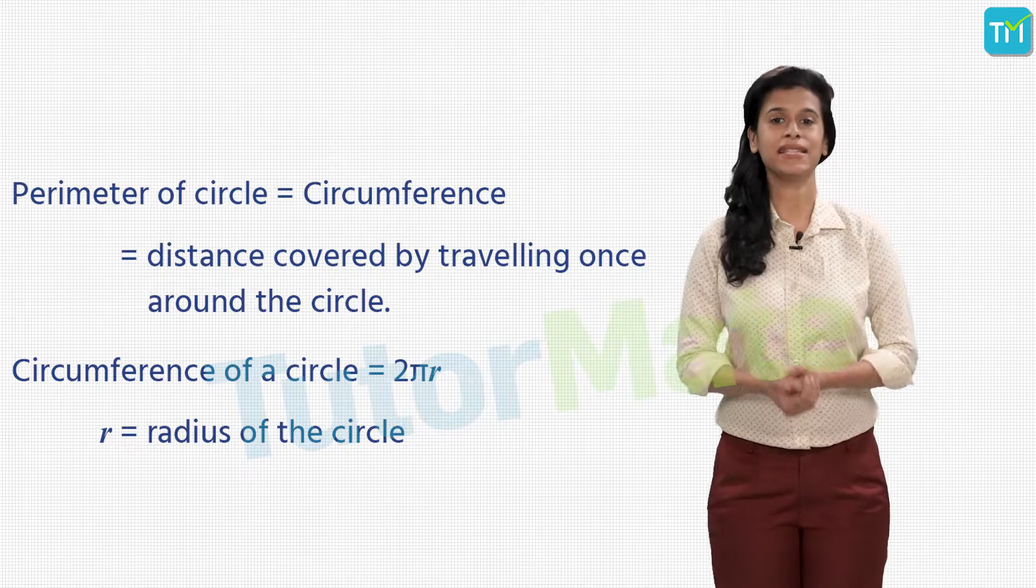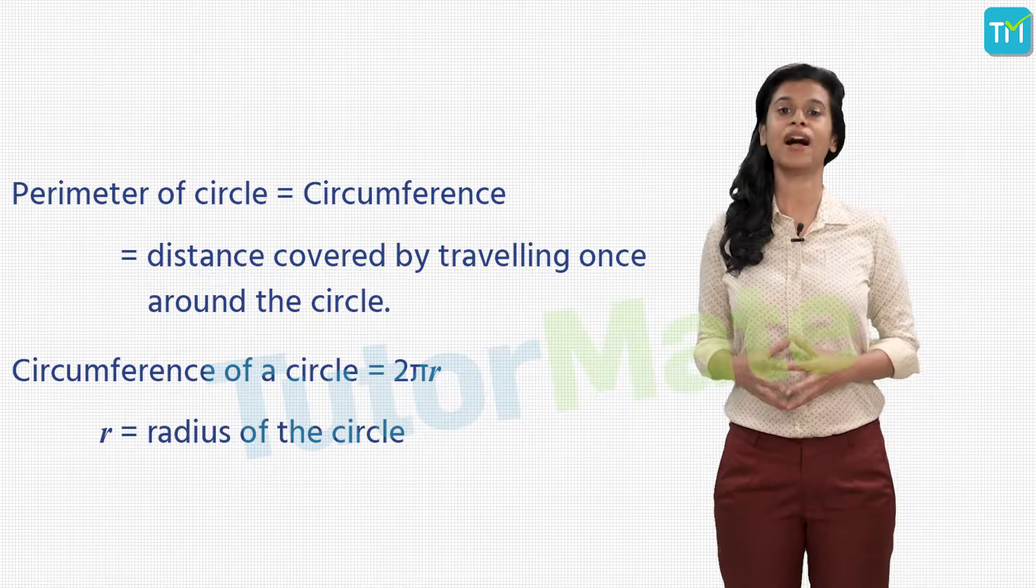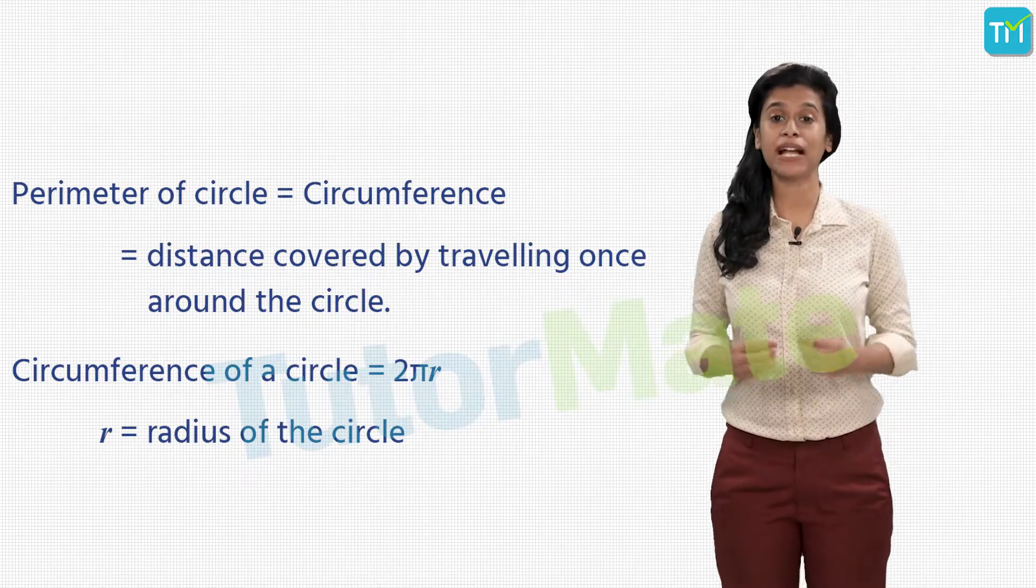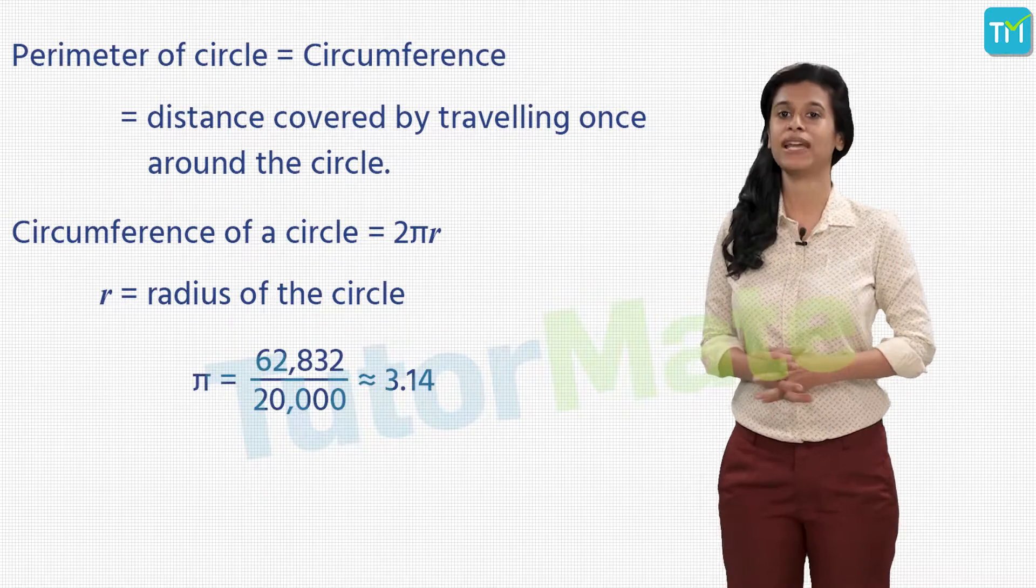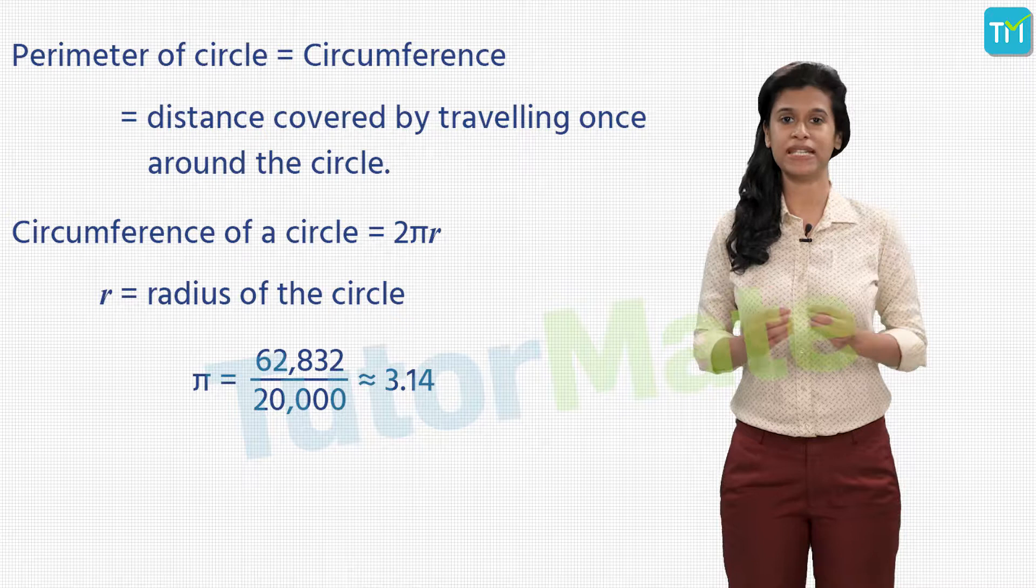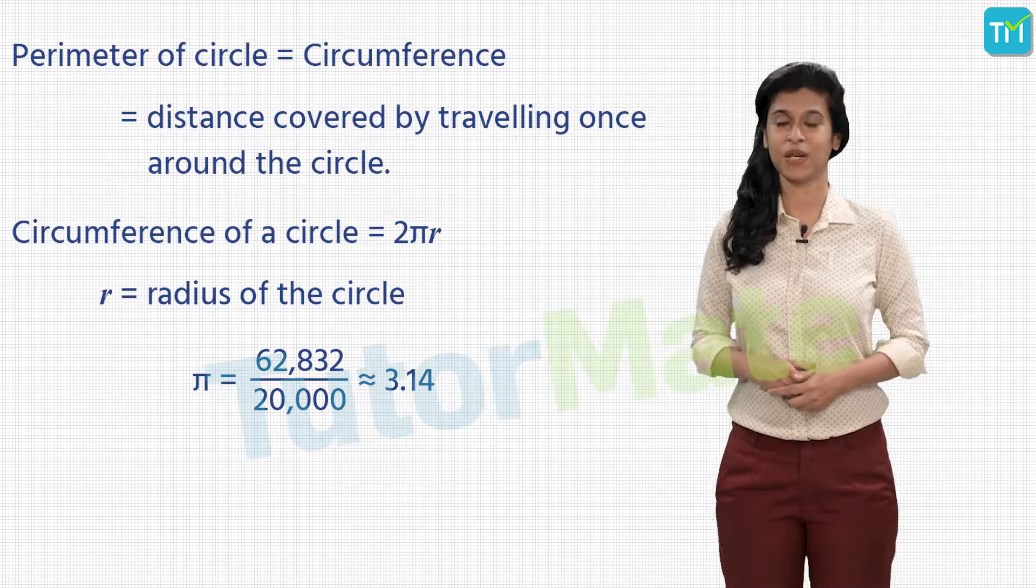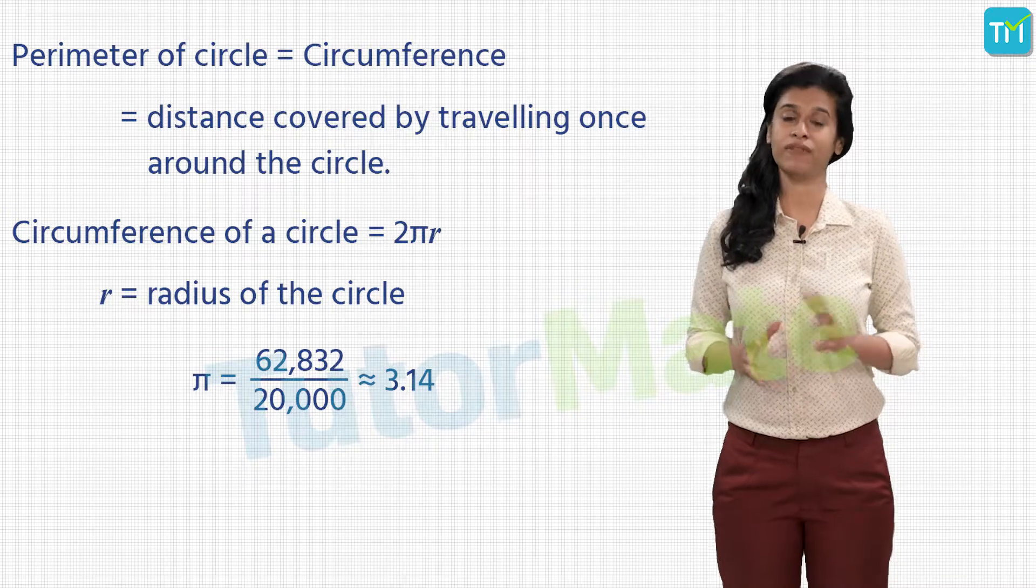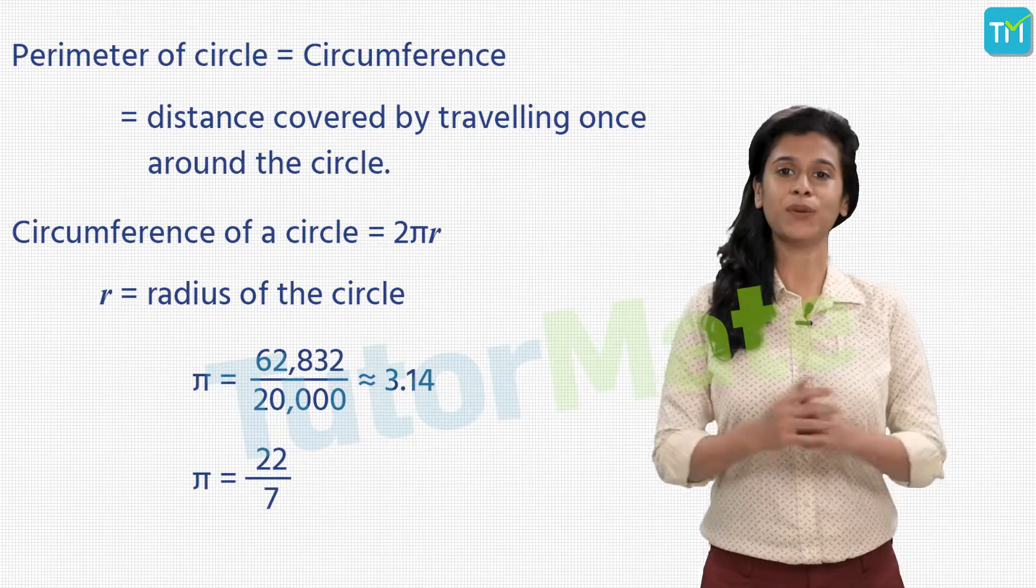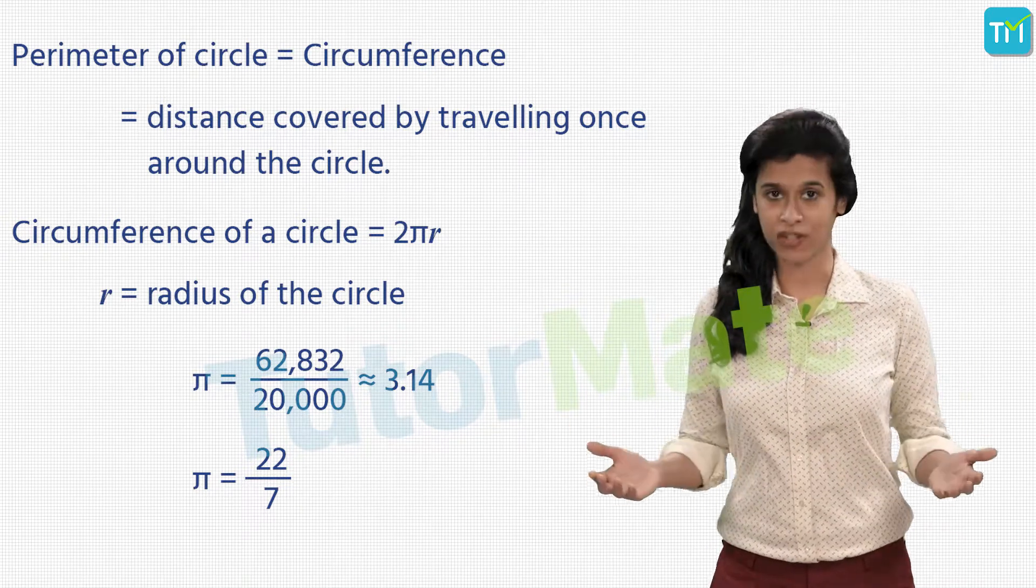Here pi is an irrational number and its value was given by the great Indian mathematician Aryabhata. He stated that the value of pi can be calculated as 62,832 by 20,000, which is approximately equal to 3.14, but for practical purposes we also assume the value of pi to be 22 by 7. So that was the perimeter of a circle, that is its circumference.